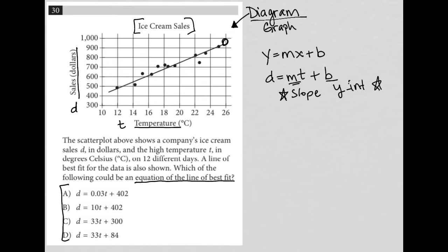So the y-intercept is a little tricky here because this is actually not the y-axis, right? We have our T value or our x value here is 10. The y-axis should be where the T value is 0.